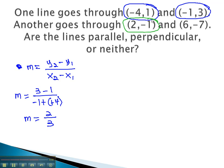We will see how it compares to the second line, that goes through (2,-1) and (6,-7). Using the slope formula, y2 minus y1 over x2 minus x1, let's plug in our values and see what we find. Y2 is negative 7, minus y1, which is negative 1, over x2, which is 6, minus x1, which is 2.